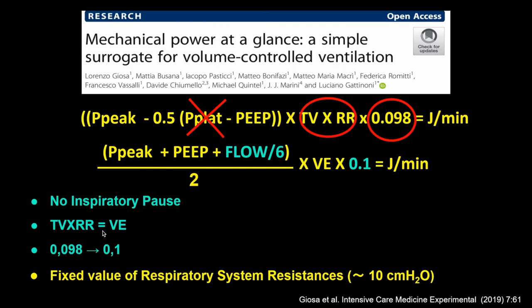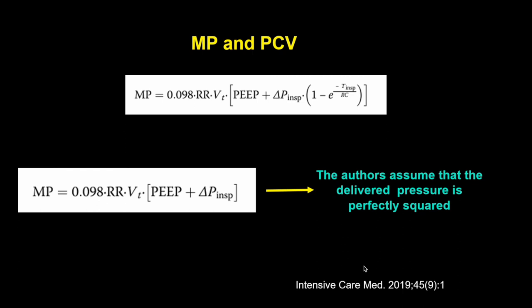So you no longer need to perform an inspiratory pause every time you need to calculate mechanical power — you can directly read the values from the monitor: the PEEP, the peak pressure, and the flow. The resistive power has been approximated to a factor of 10, making the calculation much easier. For pressure control, it is the same correction formula applied to minute ventilation times (PEEP plus P-inspiratory). The authors assume that pressure delivery is perfectly squared, which is a decent assumption that doesn't change the value much.